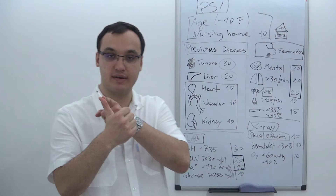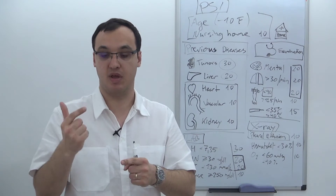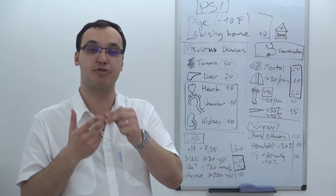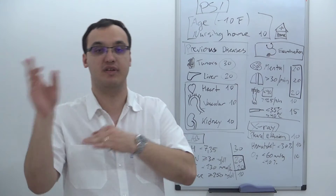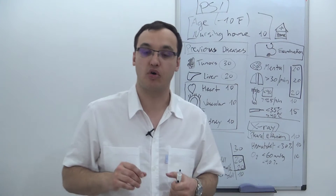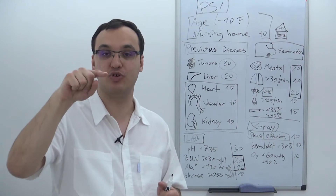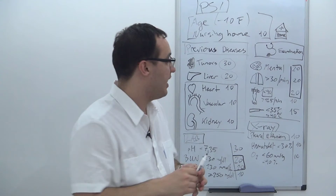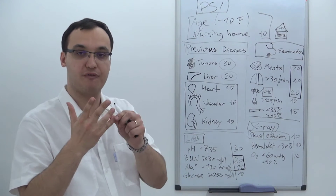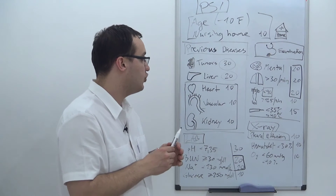Group number one and group number two will go home and be treated at home. Group number four and five will be treated in the hospital. Group number three, in the middle, can be treated at home or in the hospital depending on the situation, or can be treated at home with a nurse. So remember: group one and two goes home, group four and five stays in the hospital, and group three has to be decided individually.